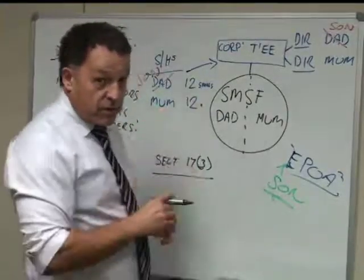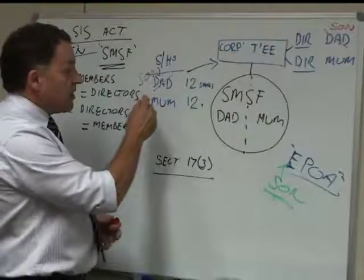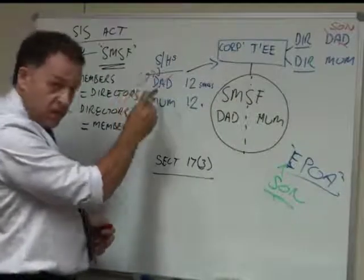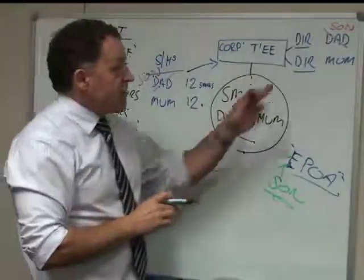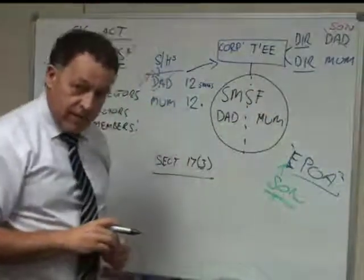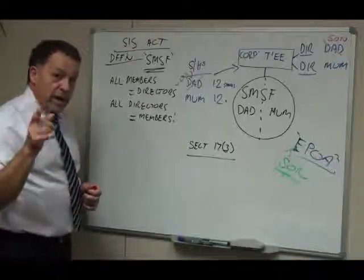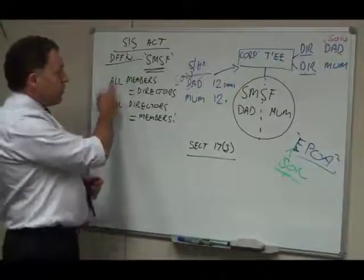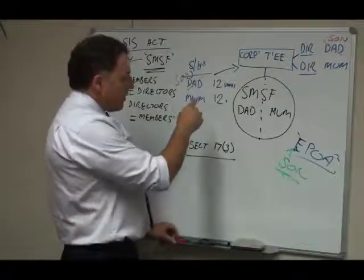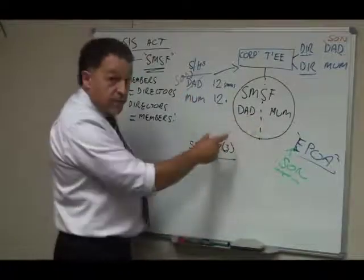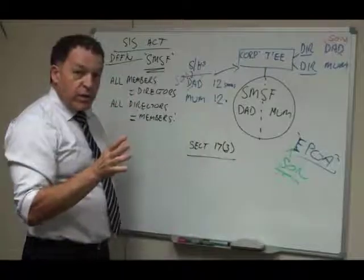So there's two examples of how that might happen. So now we have the son who is a director in Dad's place because he has gone through this process, taken control of Dad's shares, had a meeting, appointed himself as a director. So now the son and the mother are directors of the super fund. Now, you may well say, well hang on, don't we have a problem here? Because now all the members are not directors. Very important point. Because now, Mum and Dad are still members, but Mum is a director, but Dad is no longer a director. So on the face of it, we've got a problem.